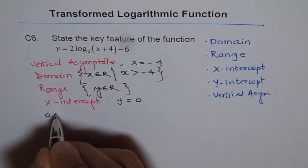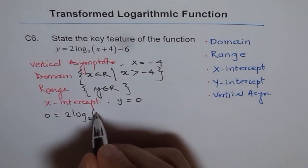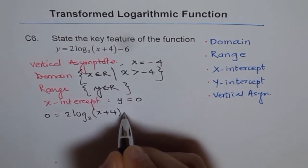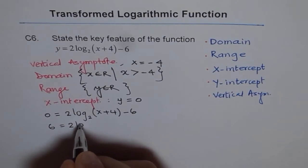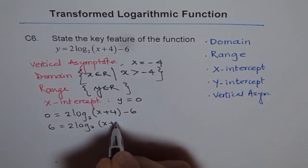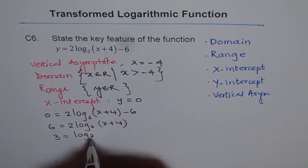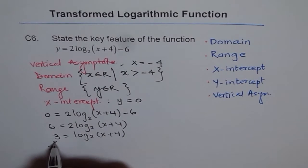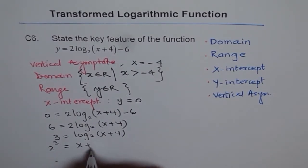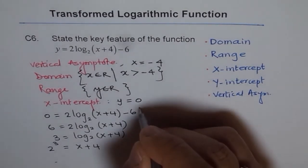So we'll write 0 here for y. So we get 0 equals 2 of log to the base 2 of x plus 4 minus 6. Now to calculate this, we'll bring 6 to this side. 6 equals 2 log 2 of (x plus 4). Now we'll divide by 2. 6 divided by 2 is 3, so we get 3 equals log 2 of (x plus 4). Now that means we can write it in exponential form after this. 2 to the power of 3 equals x plus 4.